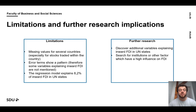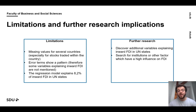Looking at our limitations and further research implications: we had missing values for several countries, especially for stocks traded within the country, which was a problem in developing countries. Our error terms show a pattern, so there are some variables explaining inward FDI that we haven't included. The regression model explains 8.2% of the variance of inward FDI in United Nations countries, which is in the frame of other research. For further research, we recommend discovering additional variables explaining inward FDI in United Nations states and searching for institutions or other factors with a high influence on FDI, so that the error terms can be explained and the regression model can explain a higher variance. Thank you for your attention.